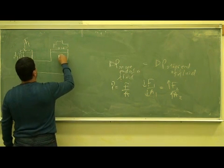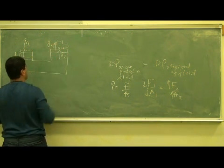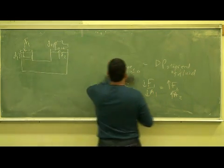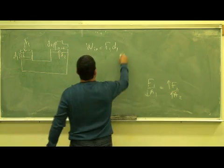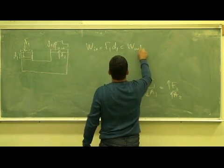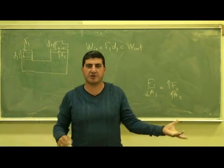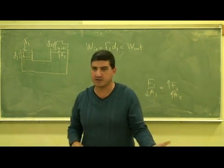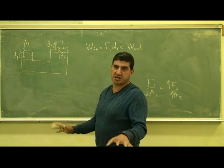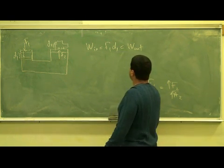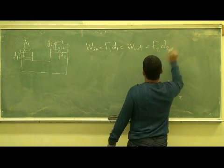And then I raise the car a distance D2. The work in, F1D1, is equal to the work out. In reality, the work in is actually even bigger than the work out, because there is no perfectly efficient engine. So the work in is greater than the work out. But in ideal circumstances, in ideal condition, the work in is equal to the work out, which is equal to F2, D2.